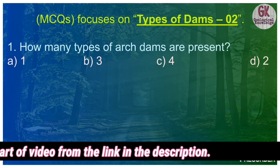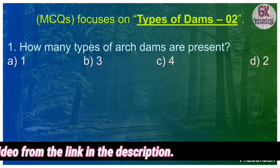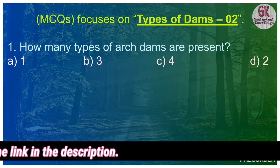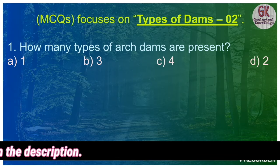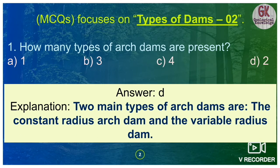First question: how many types of arc dams are present? Options are one, three, four, or two. The answer is two types of arc dams — the constant radius arc dam and the variable radius arc dam. One type has a constant radius, and the other type has a variable radius.